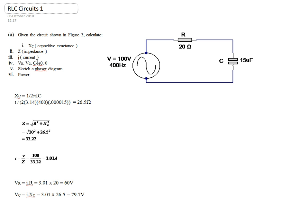To calculate the cosine of the angle, or the power factor, the formula is cosine theta equals R over Z. So cosine theta equals 20 ohms divided by our impedance Z of 33.22 ohms, giving a value of 0.606. Then to get theta, we take the inverse cosine of 0.606, which gives us a phase angle of 52.6 degrees.